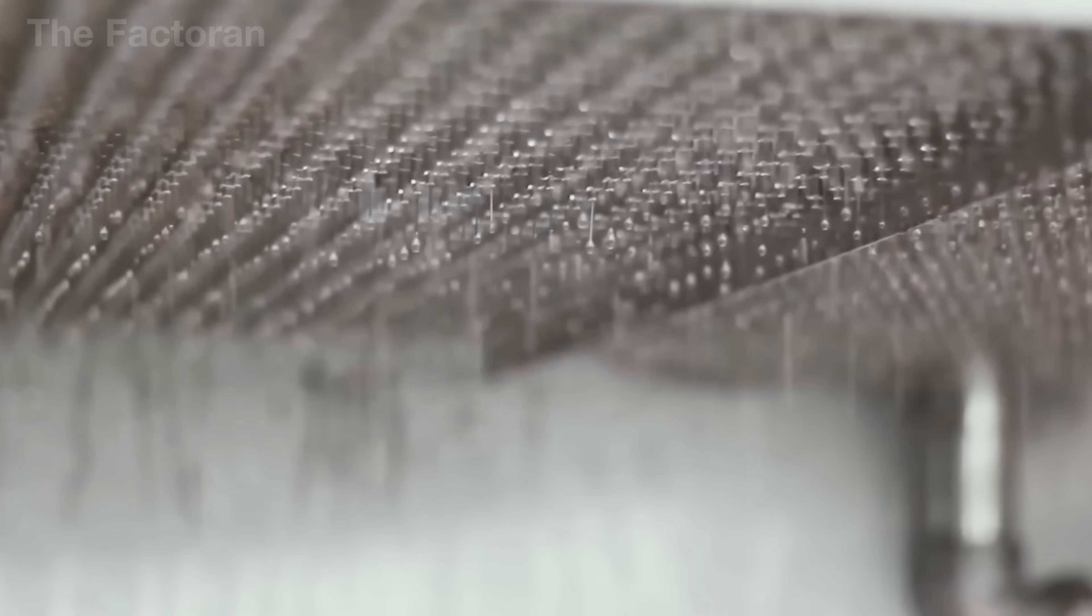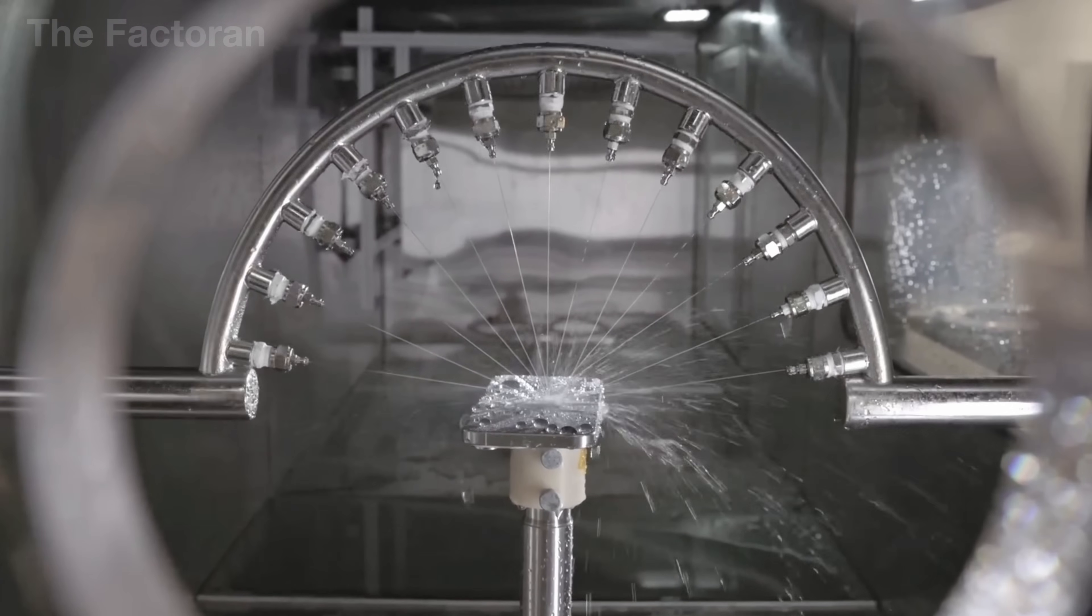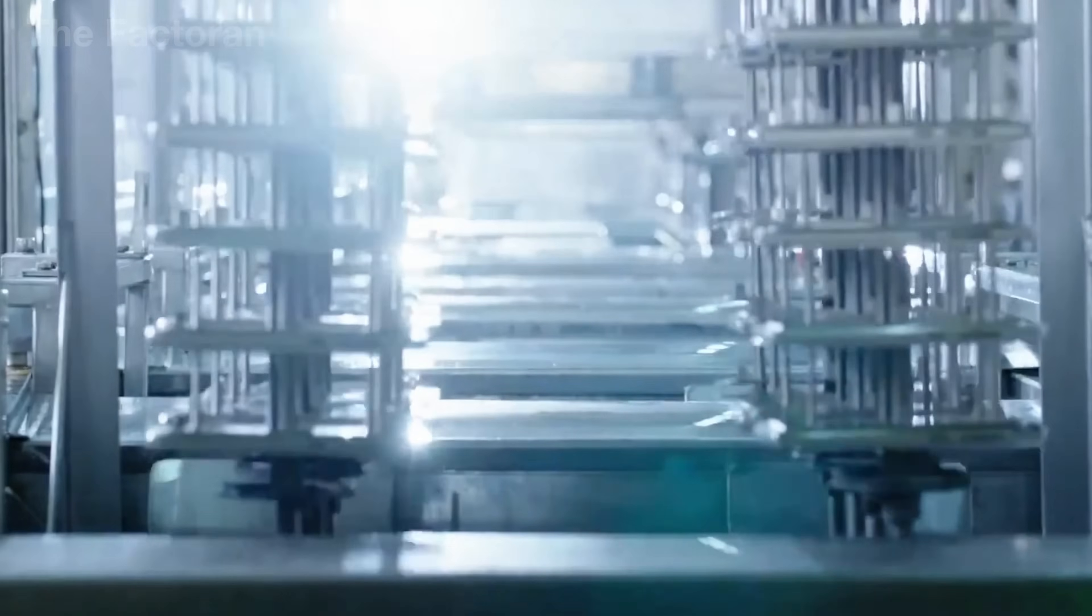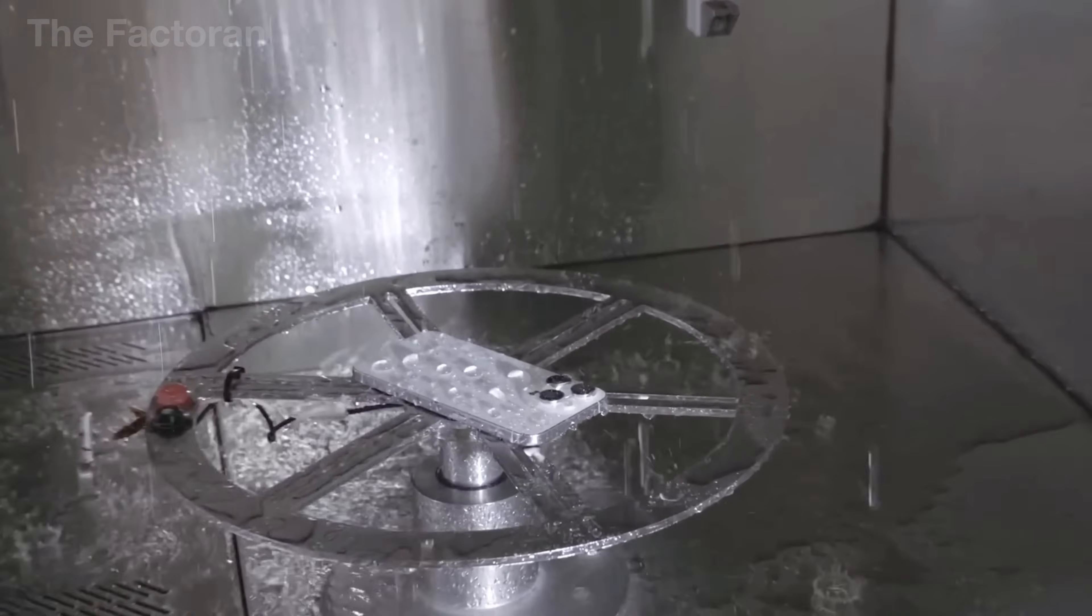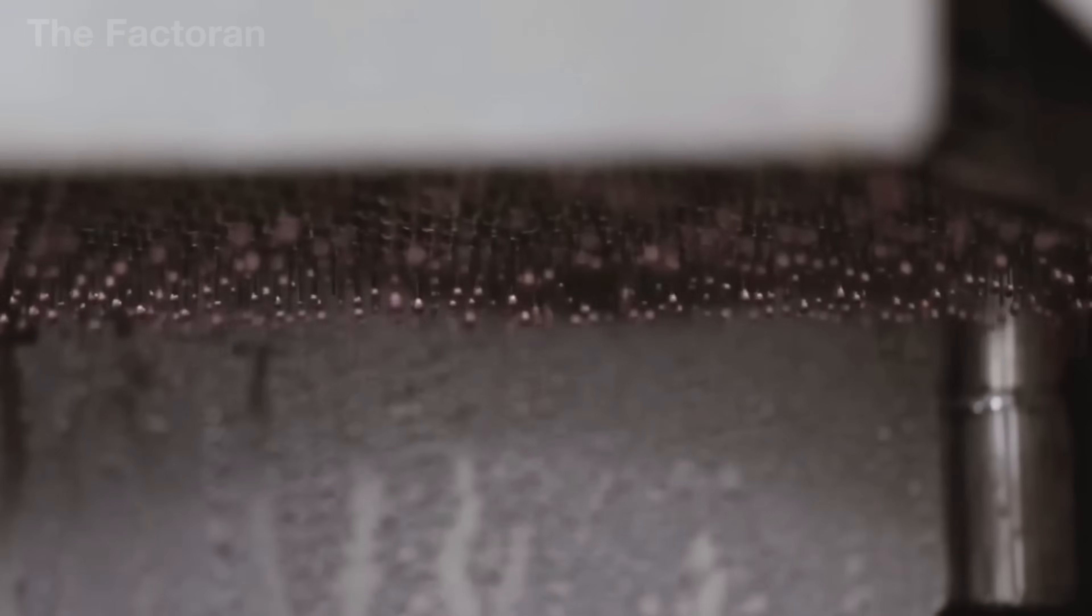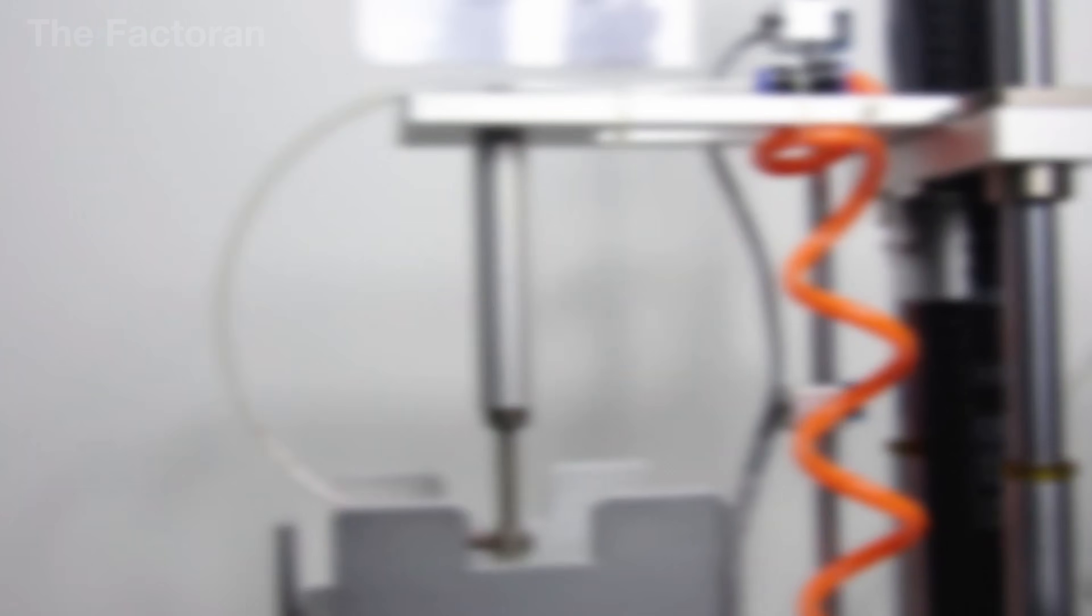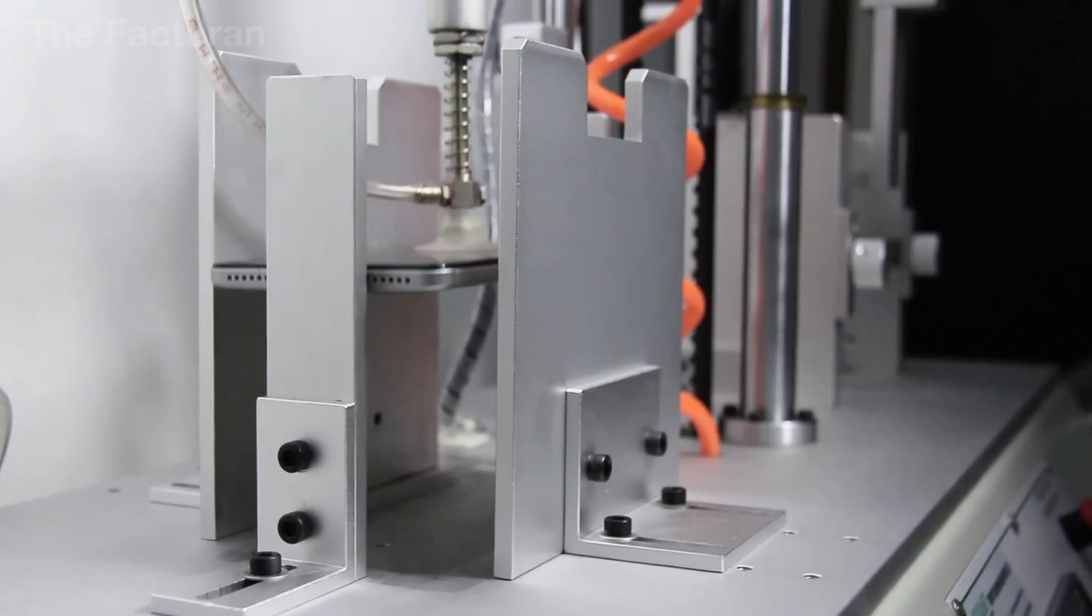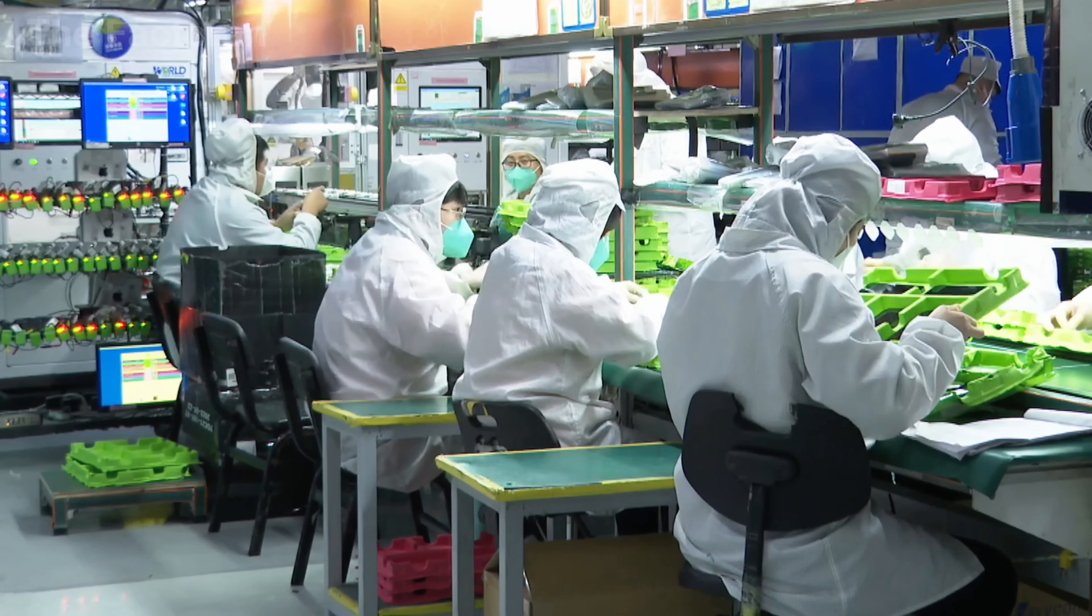Following that, the devices undergo water and dust resistance testing according to IP standards. Each unit is exposed to mist, immersion, or direct water sprays to ensure the enclosure effectively prevents the intrusion of liquids and dust. Only those iPhones that successfully pass all of these rigorous tests are allowed to move on to the packaging and shipping stage, guaranteeing that the user receives a flawless, durable, and safe product.